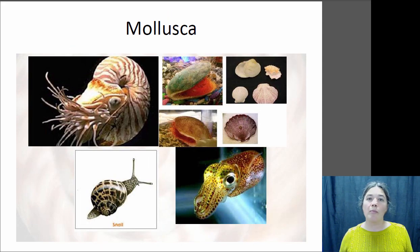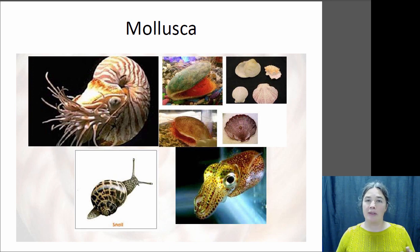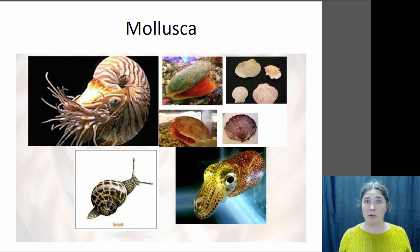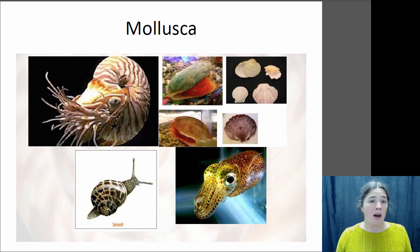The mollusks — phylum Mollusca — include the bivalves, such as clams, mussels, and oysters, anything with two shells that close; the gastropods, which are snails and slugs; and the cephalopods, which are squid, octopus, and nautilus. Cephalopods are super cool and cute — the octopus is one of the few invertebrates that can learn by watching other octopi; they're incredibly intelligent and really interesting critters.